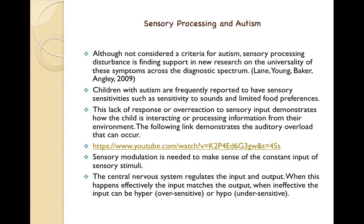Sensory modulation is needed to make sense of the constant input of sensory stimuli. Sensory modulation is how the brain responds to the sensory environment and how it helps us remain at the appropriate levels of arousal. This is something that can be taught to students using sensitization and habituation therapies, usually by an occupational therapist. The central nervous system regulates the input and output — when this happens effectively, the input matches the output.